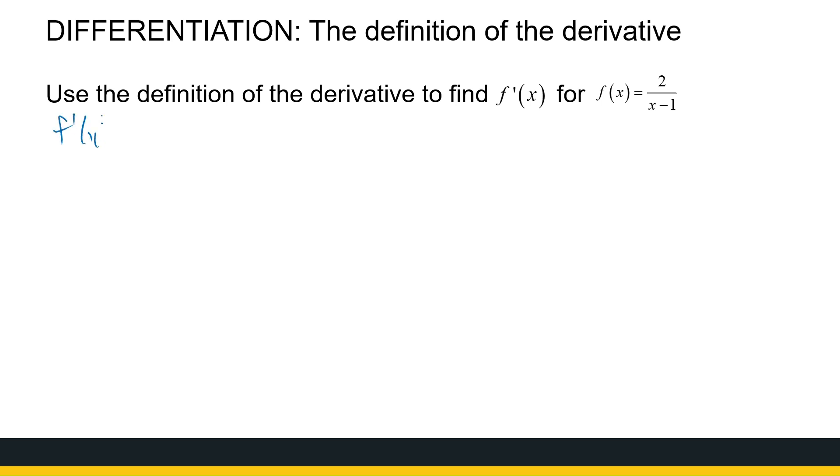The definition says to me, the derivative is the limit as h approaches 0 of f of x plus h, which is 2 over x plus h minus 1. It doesn't have to be in brackets. I'll just leave it there for now. Minus f of x, which is 2 over x minus 1. Everything divided by h.